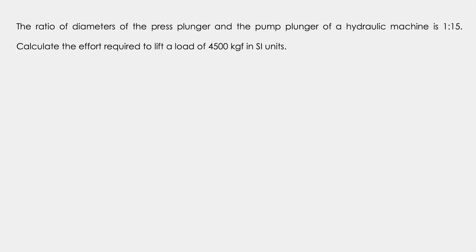Now here, instead of the smaller piston and the larger piston, the terms press plunger and the pump plunger are used. So don't get confused. The output force F2 is 4500 kgf. D1 upon D2, the ratio of the diameters is 1 is to 15. And we need to find out the effort which is nothing but the input force F1.